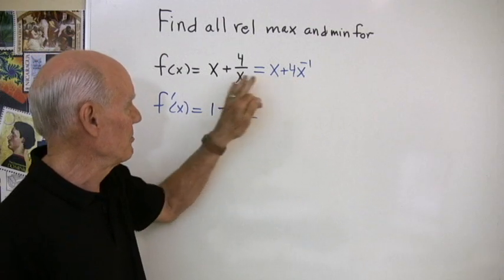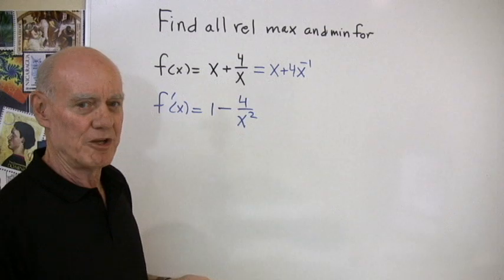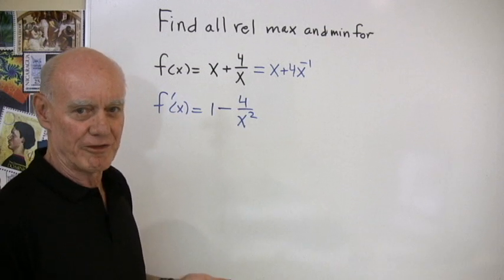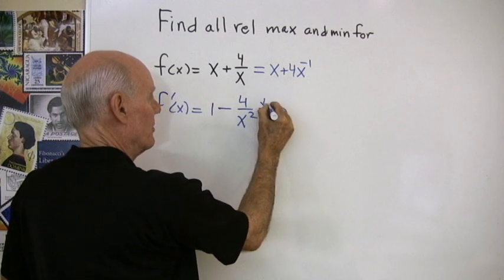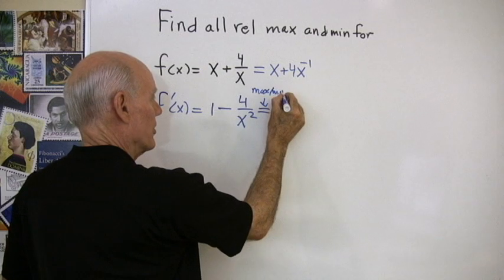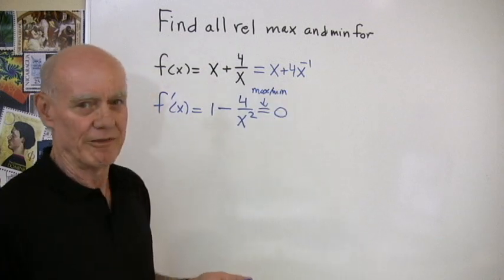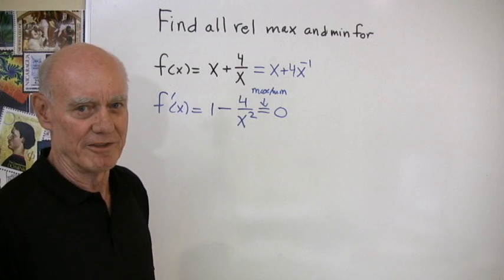All I'm interested in is where this first derivative equals 0. So I'm going to set it equal to 0. That tells me where my maximum and minimum points possibly are. I don't know if it has any, but if it does have them, they will happen when the first derivative is 0.